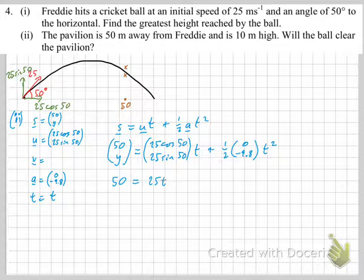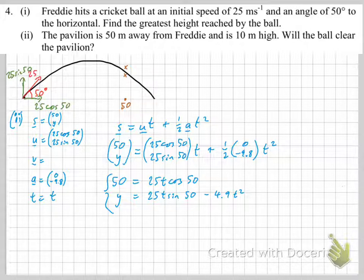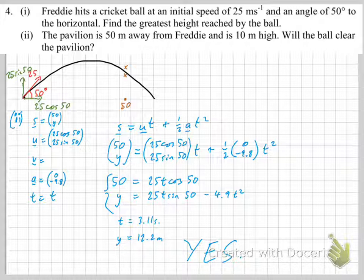Splitting into two equations — top and bottom. The first equation, 50 equals 25T cos 50, rearranges immediately to give T equals 3.11 seconds. Substituting that in for the y component, we're done. The answer is yes — the ball does clear the pavilion. We just needed y to be greater than 10, and it is.